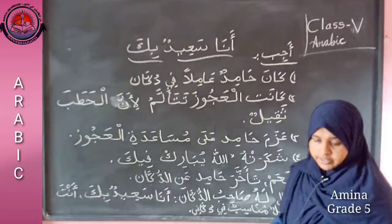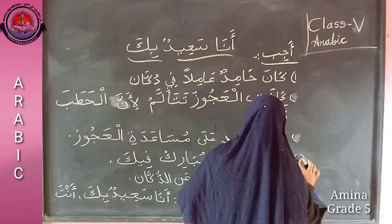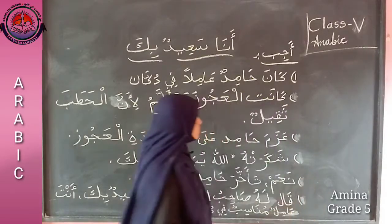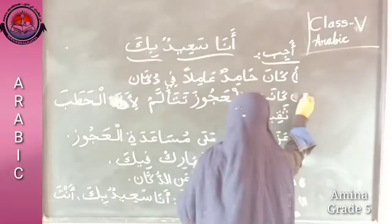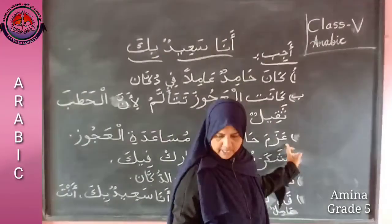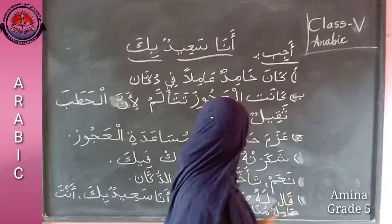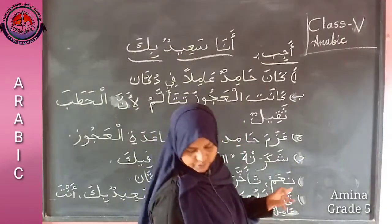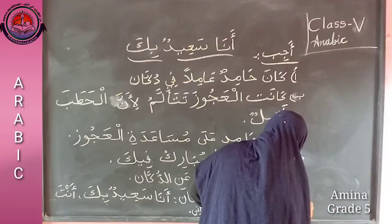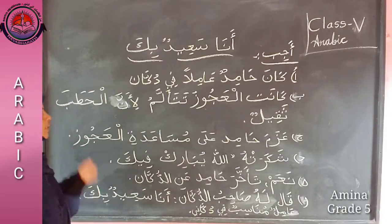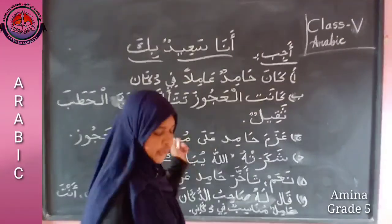I will write the letters instead of numbers because letters are given in the textbook and numbers are not written there, so you will be confused. First one is alif. The second question ba - kanatil ajuzu. Then jim - azama hamid. Next dal - khaifa shakaratuhul ajuz. Next haa - halta akhara hamid ani dukaan. All of you write all the answers in your notebook. If you have any doubt you can call me.